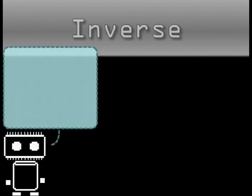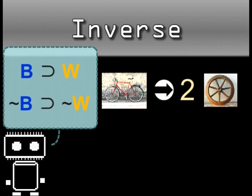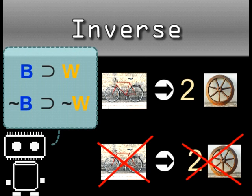You can play with that statement. First, invert it. The inverse of, if it's a bike, then it has two wheels, is, if it's not a bike, then it does not have two wheels.